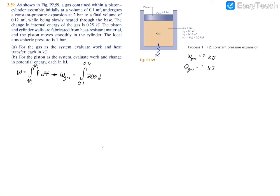Evaluating the integral gives 200 times (0.12 minus 0.1), which results in 4 kilojoules. That work is done by the gas because the result is a positive number, which makes sense since it's pushing the piston upwards.